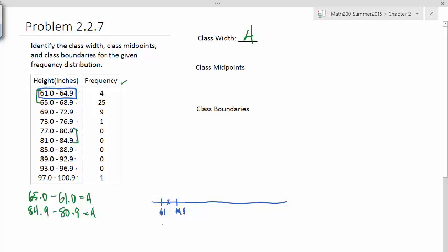So we can find the average, 64.9 plus 61. And then if we divide that by 2, we should get the results.